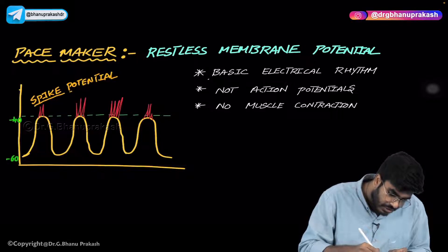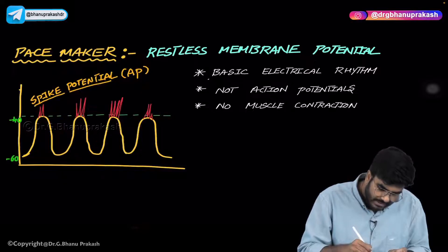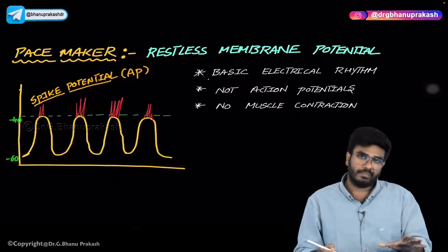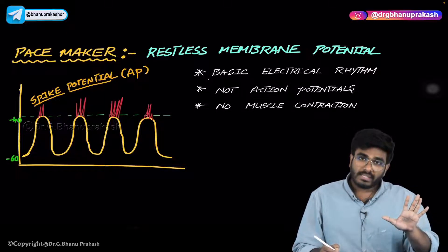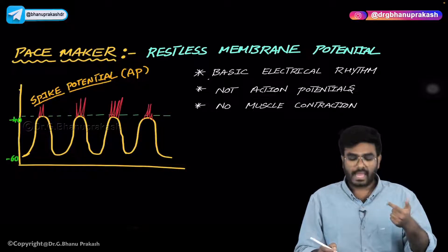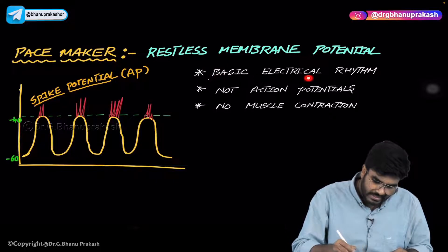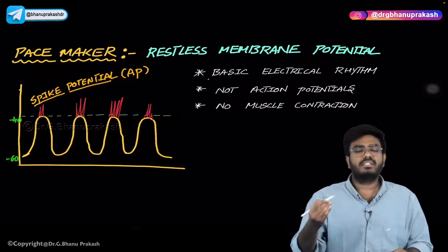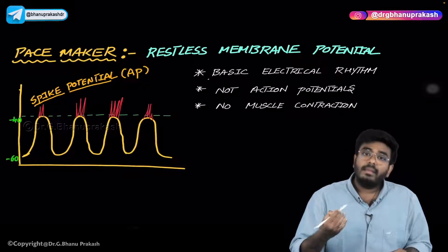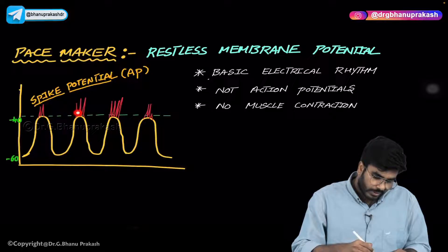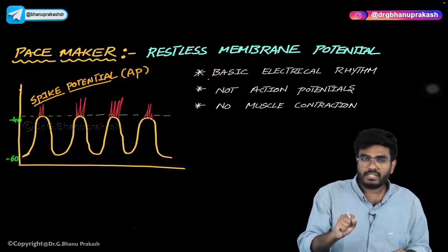Spike potentials are actual action potentials. The rhythmic oscillations seen in yellow — those are called the Basal Electrical Rhythm, or BER. BER is not an action potential; spike potentials are. The BER is seen all the time during the resting state, but whenever parasympathetic activity occurs — whenever you eat food — spike potentials are created, and only then do muscle contractions happen.